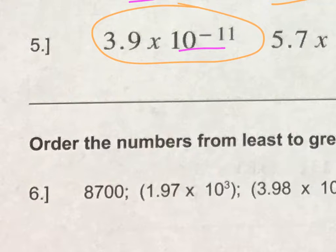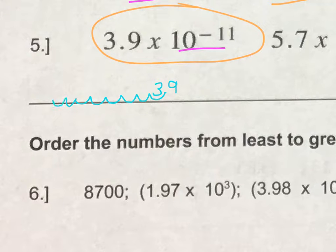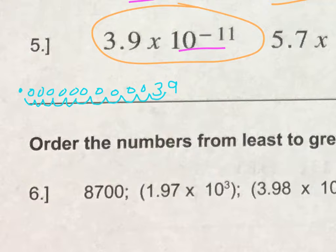First, 3.9 times 10 to the negative 11th power. I would move the decimal 11 places to the left: 1, 2, 3, 4, 5, 6, 7, 8, 9, 10, 11. Then I would fill that in with zeros. So this number is just way too small to even pronounce, but it's a decimal with 10 zeros in front of the 39. Let's look at the 5.7 times 10 to the negative 13th and compare those.